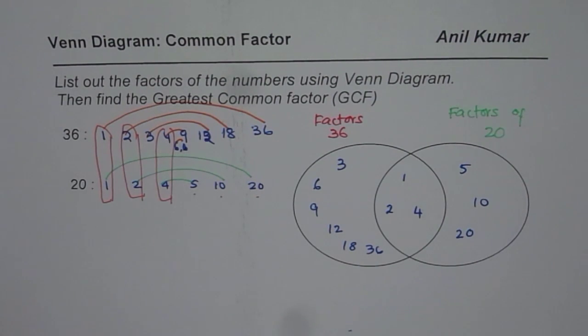So from here we can say that these are the common factors, correct? And what is the greatest common? The greatest common, of course, is 4 in this case.